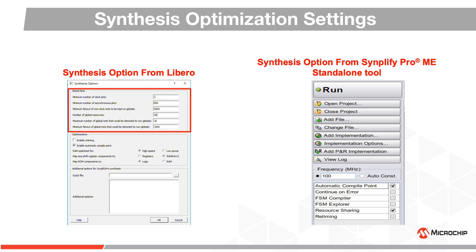Here you can manage the thresholds Simplify will use for automatic promotion and demotion of high fan-out nets onto device global resources. The default settings are usually sufficient for most designs but can be modified here.